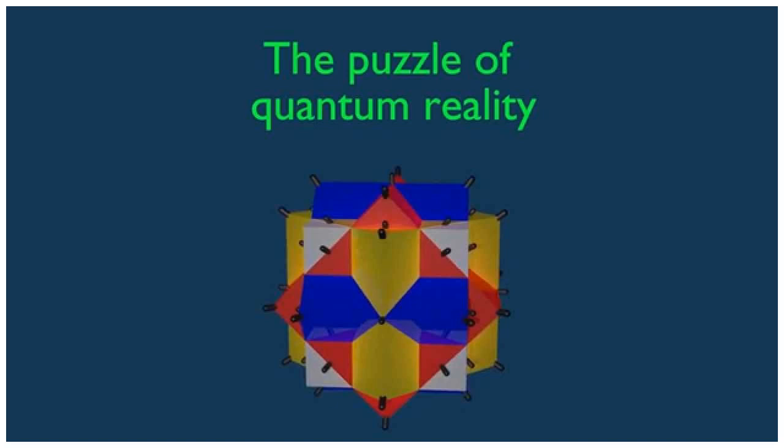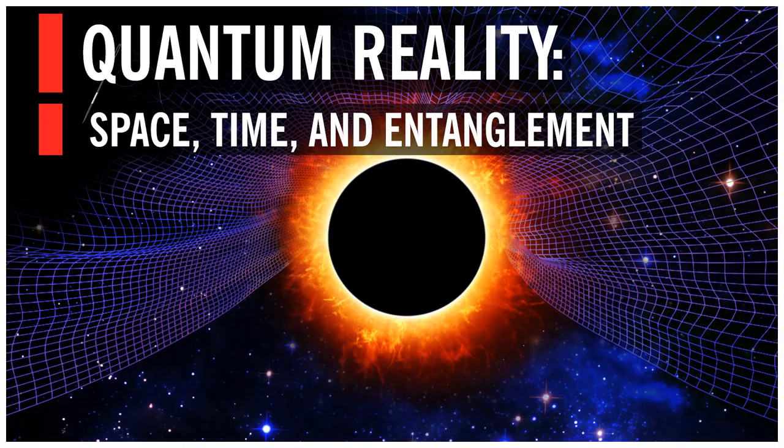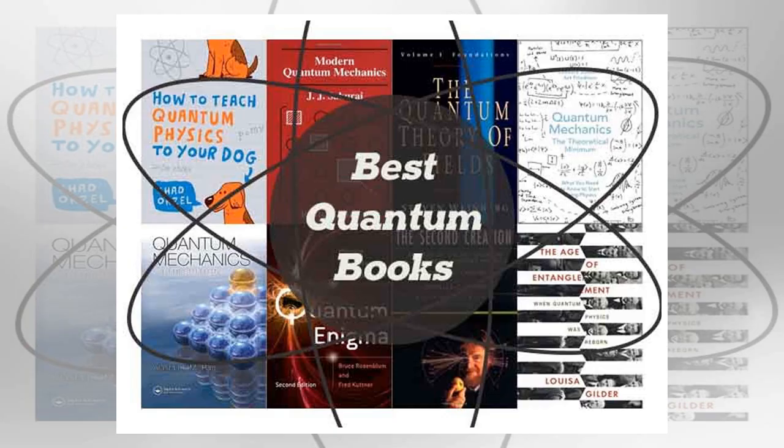Experiments over the past few decades have shown that quantum physics applies to larger and larger objects, and at this point few doubt that it applies to objects of all sizes. Indeed, quantum physics is routinely and successfully used to describe the largest thing there is, the universe itself, in the well-established field of physical cosmology.